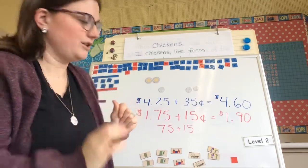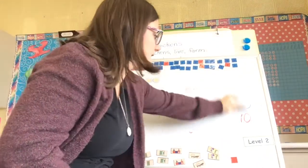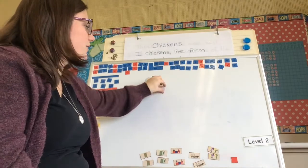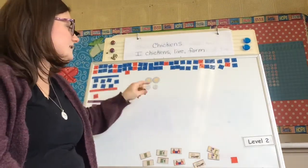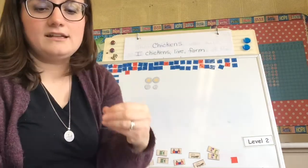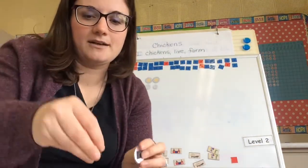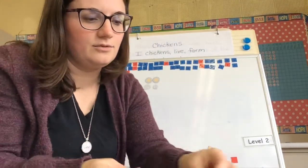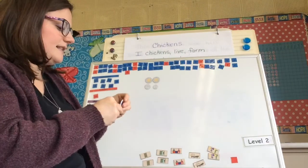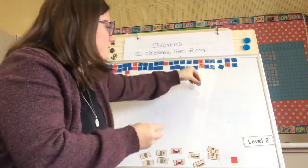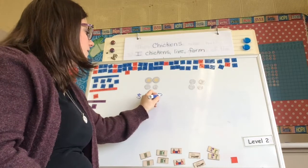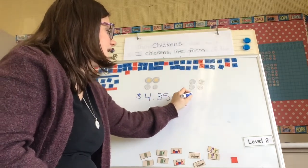Now I'm going to do another one and put my money up here again. I'm going to start with $4.35 — so I have two toonies, a quarter, and a dime. And I want to add $0.65, which I'll show with two quarters, a dime, and a nickel. So I have $4.35 plus $0.65.